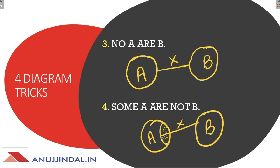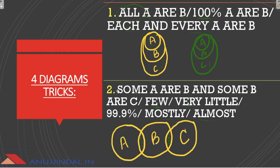Thirdly, 'No A are B' — कुछ भी A का हिस्सा B नहीं है, ये दोनों अलग हैं क्योंकि आपको बोला है 'No A are B'। इसका Venn diagram ऐसा बनेगा जहाँ A और B बिल्कुल अलग circles हैं। Fourthly, 'Some A are not B' — कुछ A जो है वो B नहीं है। आपके 80% questions हमेशा 'all' और 'some are' से पूछे जाते हैं, इसलिए 'all' और 'some are' और 'some not' की clarity बहुत ज़रूरी है।